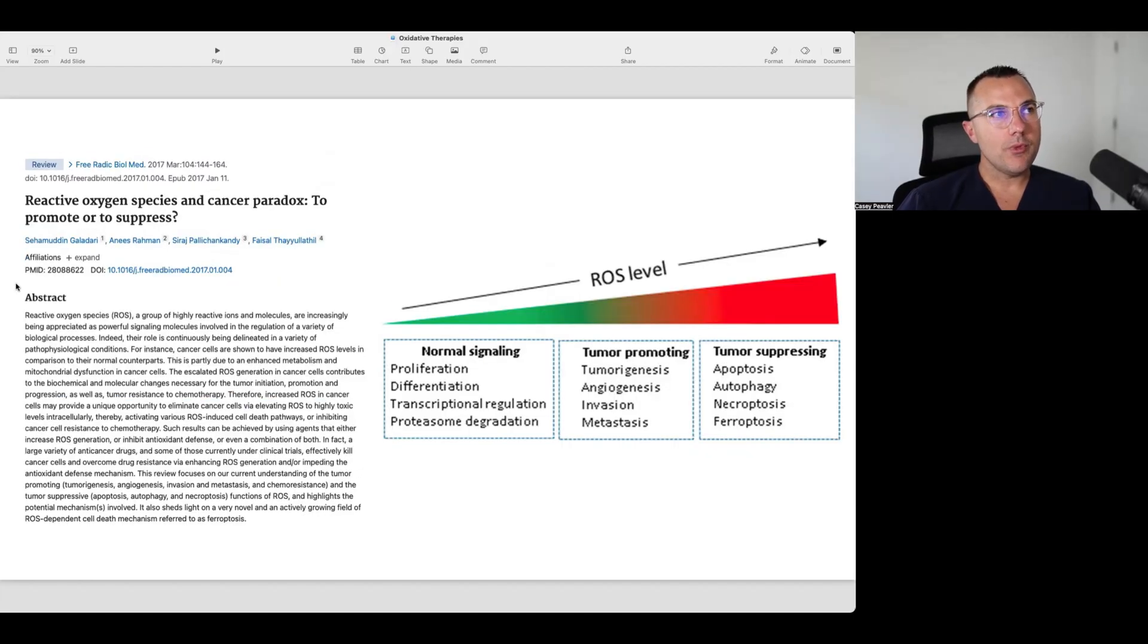Then we have the endogenous antioxidant systems, broken down into enzymatic antioxidant systems. As alluded to in the prior video, reactive oxygen species are not all bad, nor all good. It's really about having that balance. That is what matters for most of our biological systems.